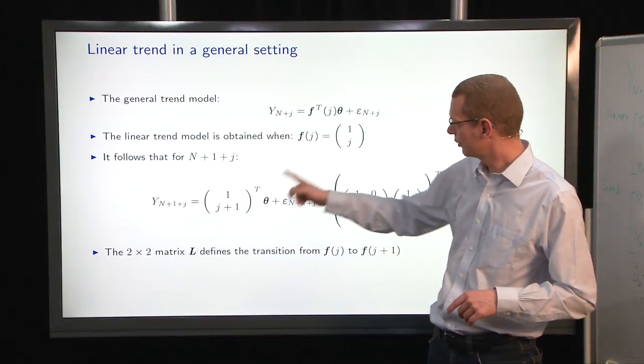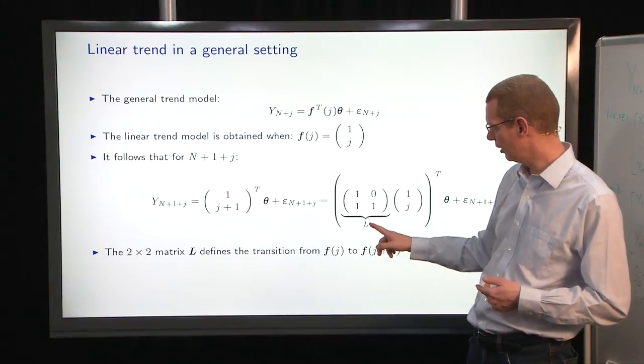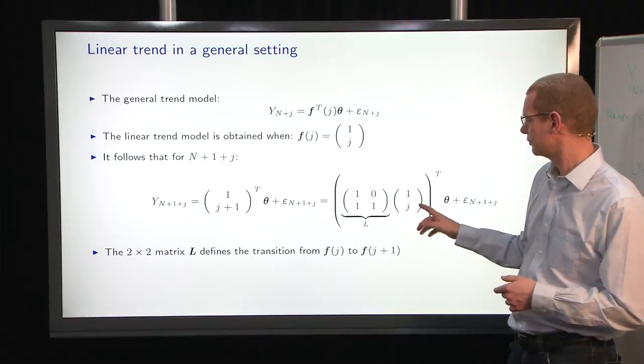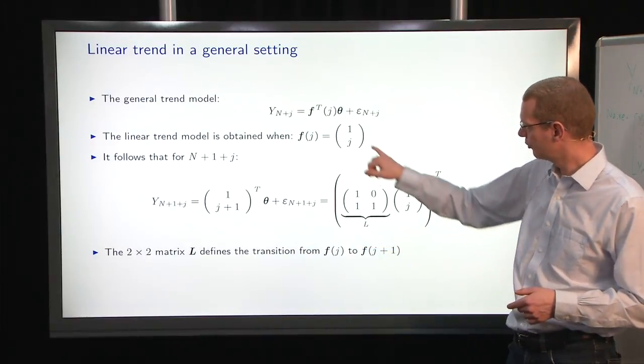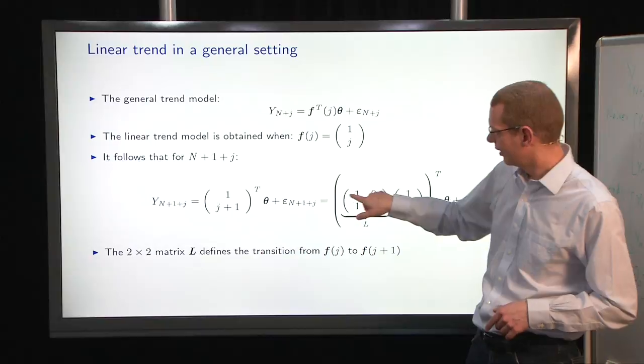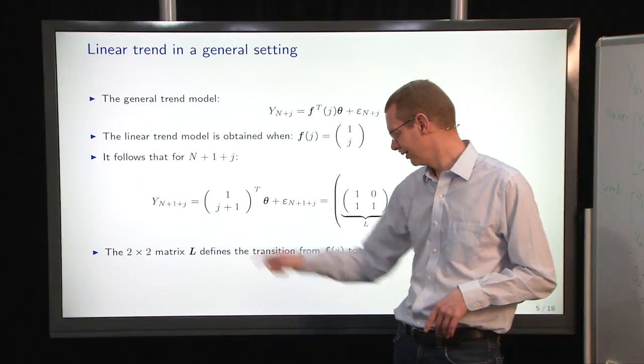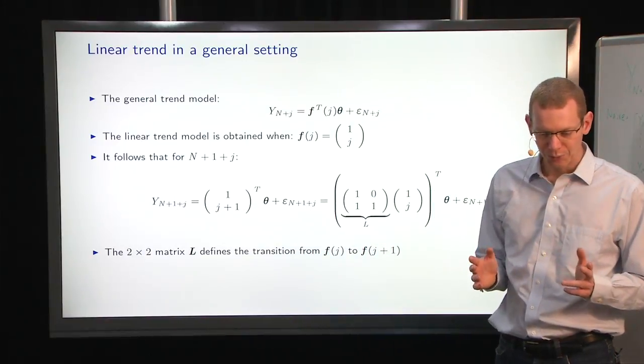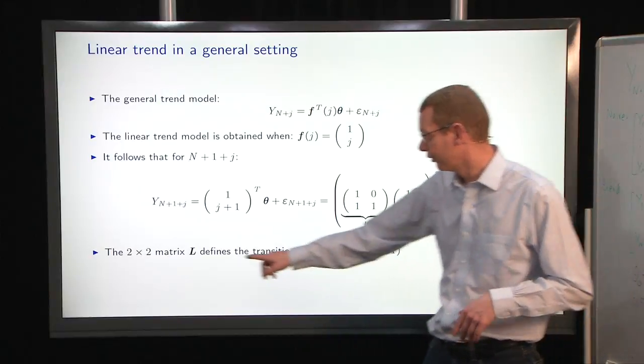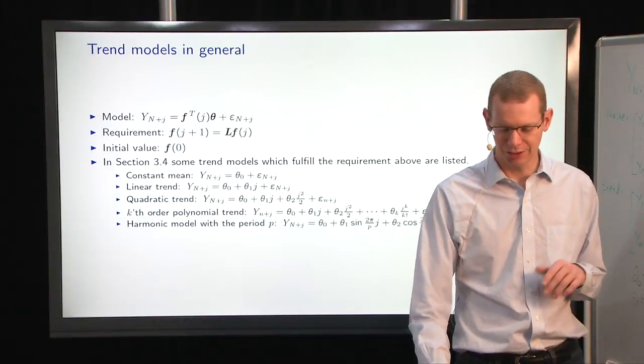How do you get from this to that? In the trend model, if it is a true trend model, you have a time step operator matrix that we label L here. In this case, it's a 1, 1, 0, 1 matrix for the linear trend model, and you pre-multiply that on the previous one, and then you get what you have down there. You keep your intercept, you still want an intercept, and then you want to have one more down here. So the L here defines the transition from f of j to f of j plus 1. That's going to come handy in a moment.